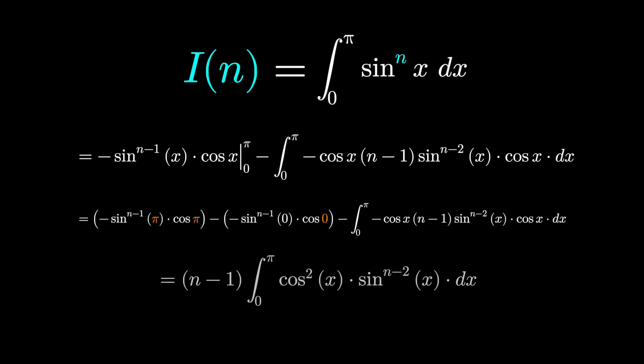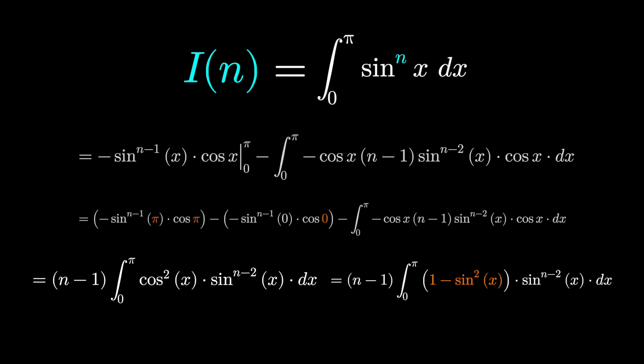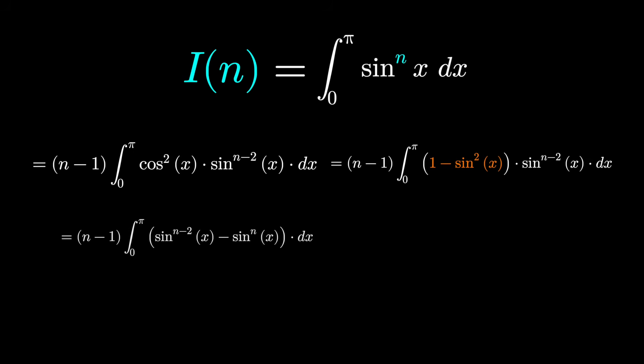Inside the integrand, we can factor out n-1, that's a constant. And we can use that good old Pythagorean trig identity, cos^2 is 1 minus sin^2. That way we can write the integrand in terms of just sine.